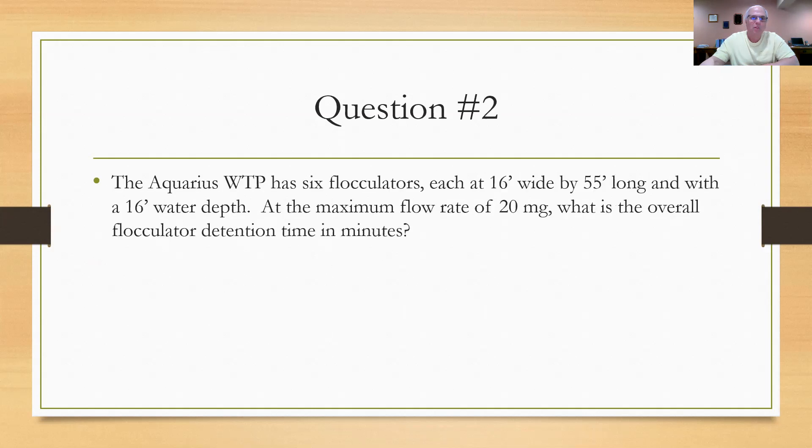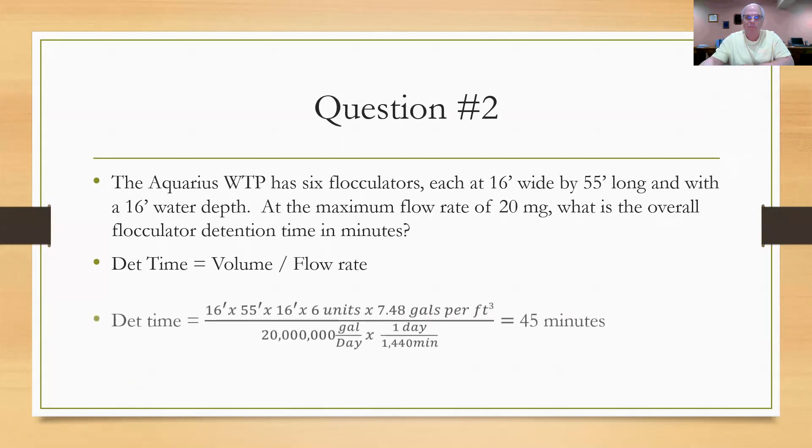Let's move on to the next one. Water leaves the two rapid mixers and goes over to as many as six flocculators in parallel. This problem tells us that the flocculators are 16 feet wide by 55 feet long and have a 16 foot water depth. Again, at the maximum flow rate of 20 mgd. What is the overall flocculator detention time in minutes? Again, we're going to use the detention time formula here. If you want to work this problem, now's the time to stop or pause the video.